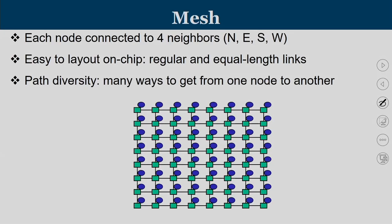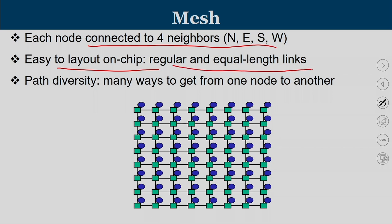In a mesh topology, blue circles represent tiles and green squares represent routers. Each router is connected to four neighbors — north, east, south, and west. It is very easy to layout because it is a planar structure with regular equal-length links connecting routers. There exist many paths from one router to another, allowing path diversity to be exploited.